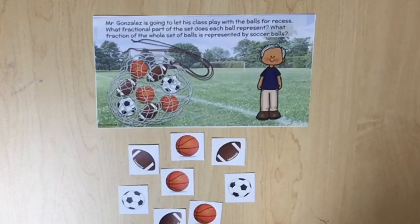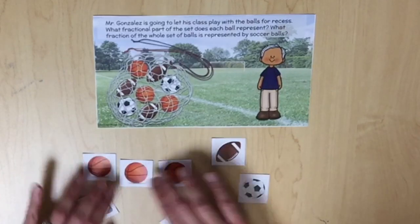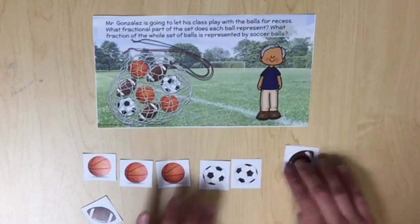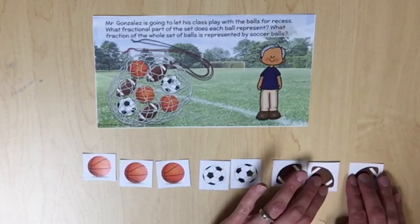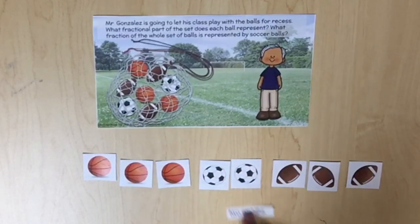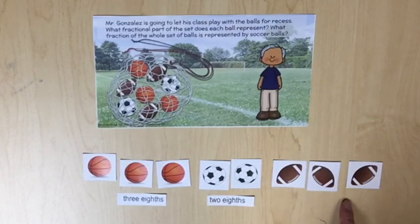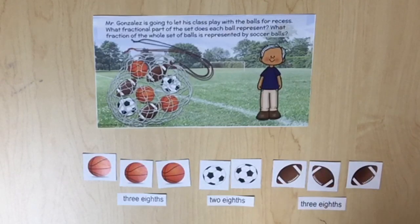Then students should determine what fraction of the whole set of balls is represented by each type. There are two soccer balls, so the soccer balls are two eighths of the set. We see three basketballs — the basketballs are three eighths of the set. And three footballs, which are also three eighths of the set.